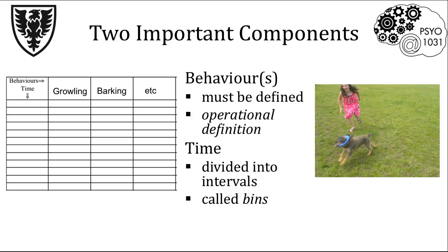Any other behaviors can be included in this table so that many behaviors can be collected and displayed at once. Splitting up the observation period into time intervals is a handy and efficient way to keep track of changes in behavior. This ethogram splits up the time intervals, called time bins, into 10-second intervals for a total period of one minute, but this could be extended if a longer period of observation was desired. Essentially, this technique allows for a number of behaviors to be collected and displayed quickly, giving a quick and easy snapshot of an animal's behavior overall.